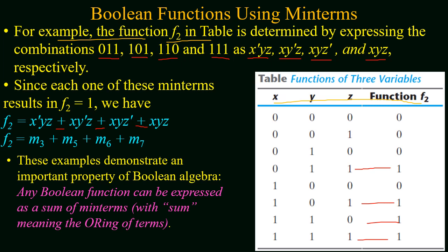After forming these min terms we will make the boolean equation as the sum of these min terms. We can also write this equation using the designations of the corresponding min terms. So f2 will be equal to the sum of m3, m5, m6, and m7. These examples demonstrate an important property of boolean algebra: any boolean function can be expressed as a sum of min terms, where sum means boolean addition or the OR-ing of the terms.